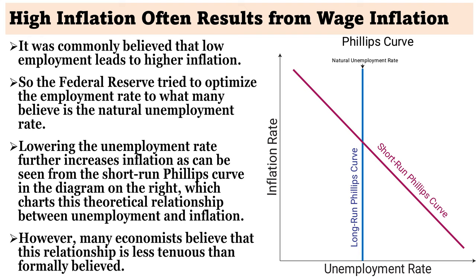It was commonly believed that low unemployment leads to higher inflation. So the Federal Reserve tried to optimize the employment rate to what many believe is the natural unemployment rate. Lowering the unemployment rate further increases inflation, as can be seen from the short-run Phillips curve in the diagram on the right, which charts this theoretical relationship between unemployment and inflation. However, many economists believe that this relationship is less tenuous than formerly believed.